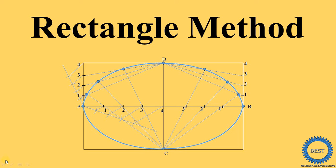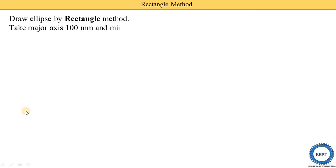In this video I explain how to draw an ellipse by using the rectangle method. First we understand the problem. We need to draw an ellipse using the rectangle method. You already know there are various methods to draw an ellipse. One of the methods is the rectangle method. For drawing the ellipse we require two dimensions: one is called the major axis and one is called the minor axis.